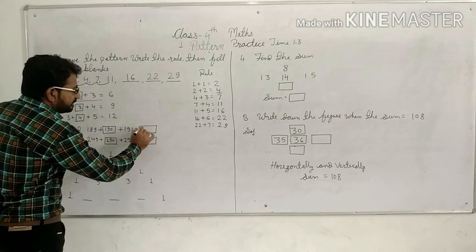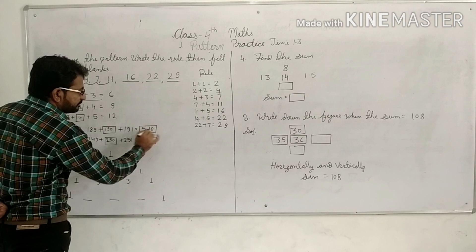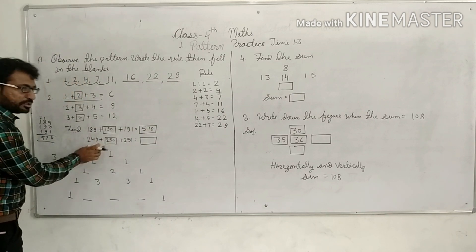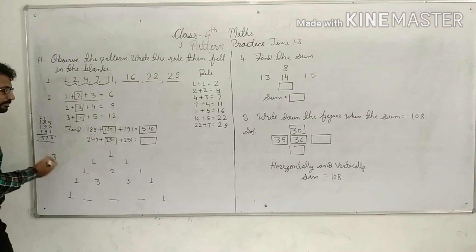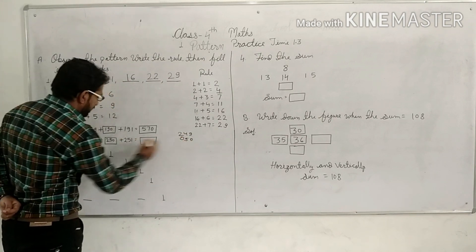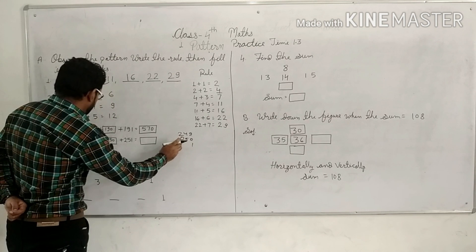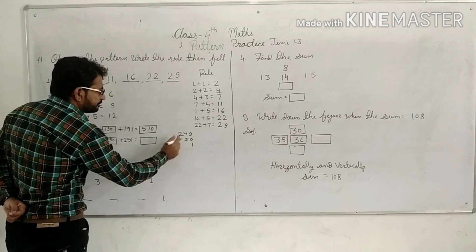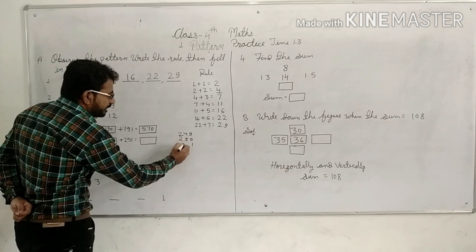Okay, so 570 is our answer. Next one, this type. If we do this, we can do this. 249, next one 250, and that's 250, 251, and next one 251.